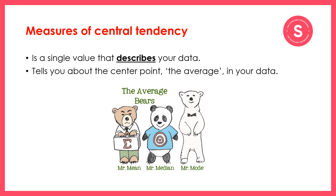Measures of central tendency — the average — is one way in which we can describe our data. As a reminder, the measure of central tendency is a single value that describes your data and tells you about the centre point, the average, in your data set. You may remember there are three types: the mean, the median, and the mode. I won't be going into detail about these in this session, but if you're interested in finding out more you can look these up.